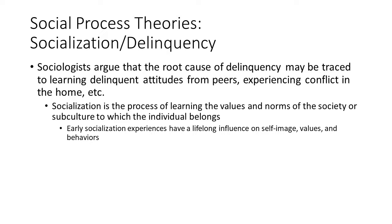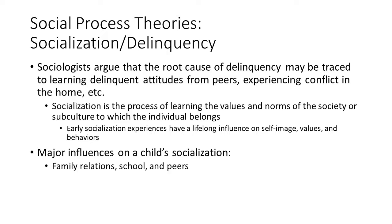What are the major influences on a child's socialization? There are three major ones: family relations, peers, and school. While we're going to talk about them in a more general sense right now, each one of these has a particular chapter later on that we will explore in more detail.